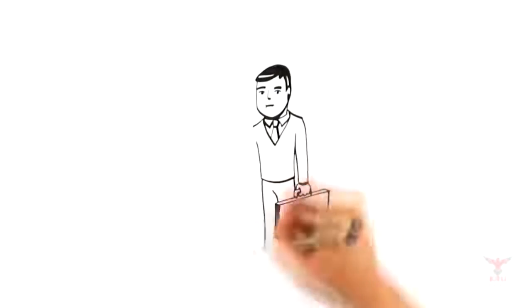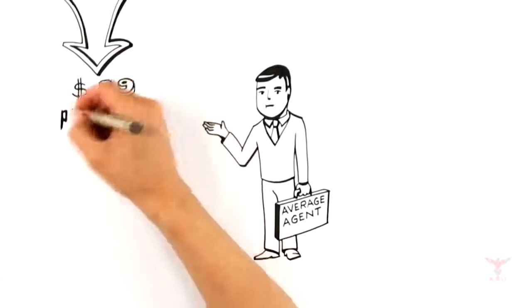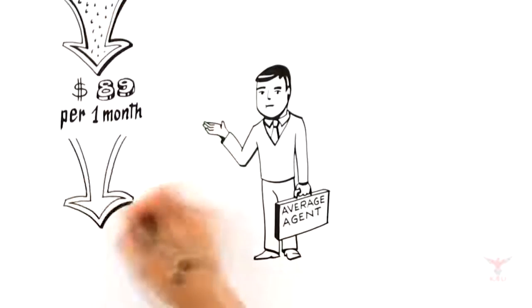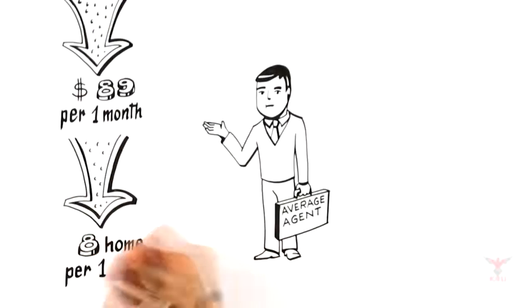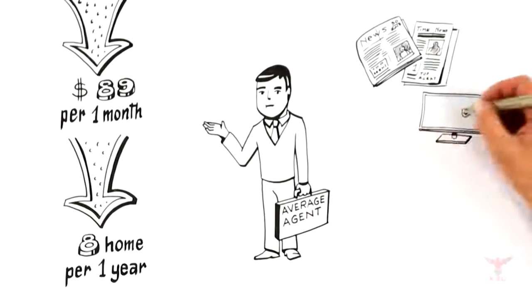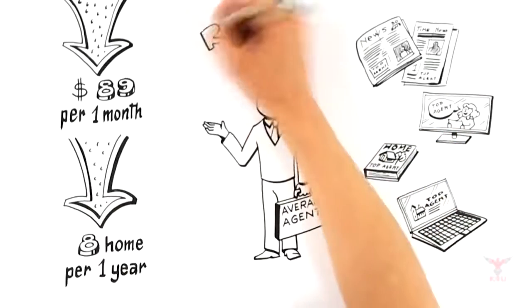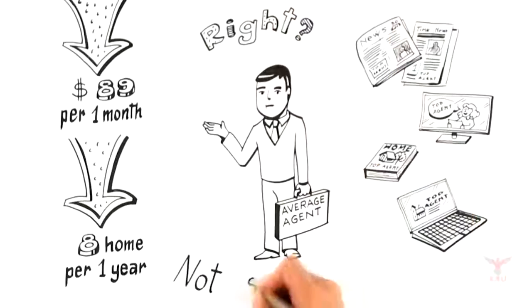Exposing your home to the market requires marketing. Research shows that the average agent only spends $89 a month on marketing and only sells an average of eight homes per year. On the other side, top agents will tout their large budgets for newspaper, TV, home magazines, and a list of hundreds of websites where they advertise. So you'd think that the answer is obvious. Hire the top agent, right? Not so fast.